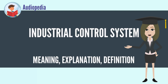The larger systems are usually implemented by supervisory control and data acquisition (SCADA) systems, or distributed control systems (DCS) and programmable logic controllers (PLCs), though SCADA and PLC systems are scalable down to small systems with few control loops. SCADA systems are extensively used in industries such as chemical processing.